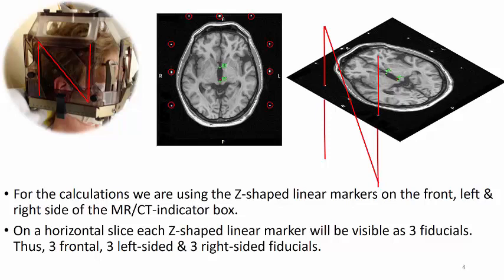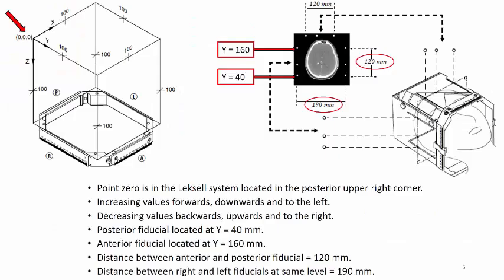On a horizontal slice, each Z-shaped linear marker will be visible as three fiducials. Thus, three frontal, three left-sided and three right-sided fiducials. Point zero is in the Lexell system located in the posterior upper right corner and we have increasing values forwards, downwards and to the left.